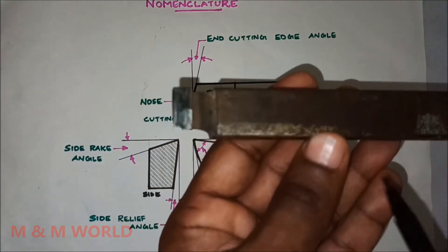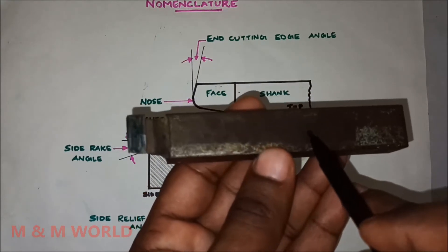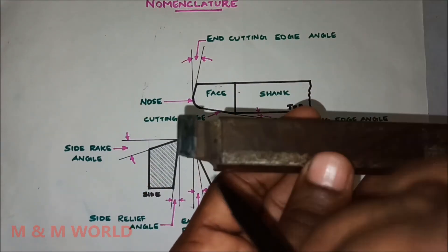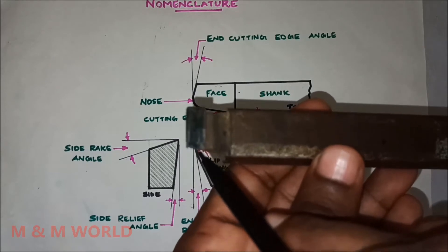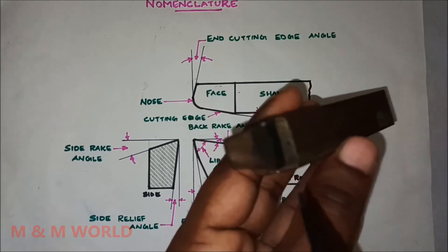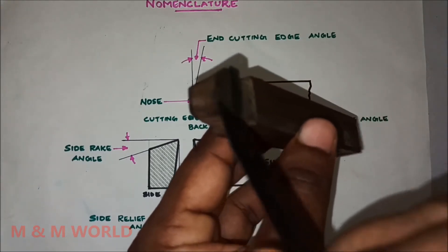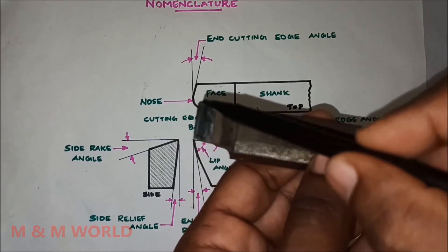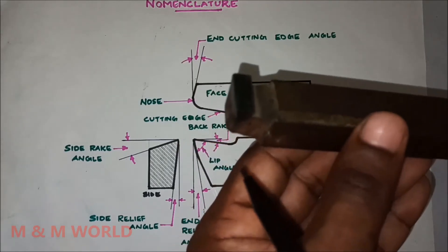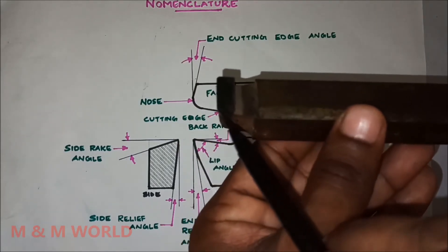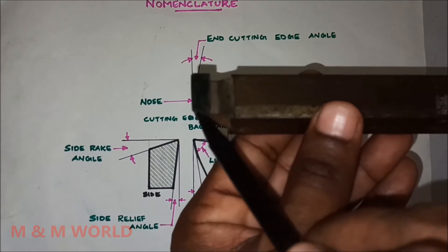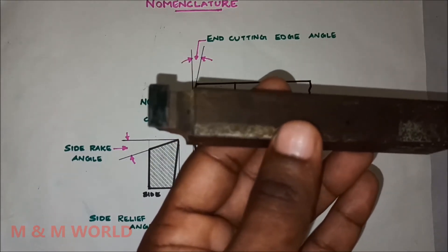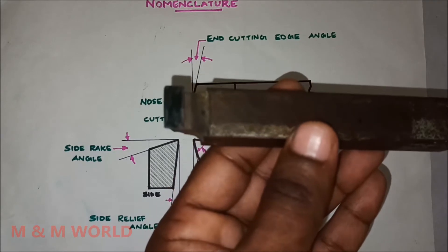So this is the shank, this is the end cutting edge and the side cutting edge, this is the end flank and this is the side flank, then this is the face of the tool, this portion is the heel, and this is the nose. These are the various tool elements in a single point cutting tool.